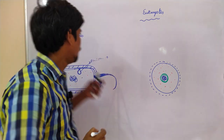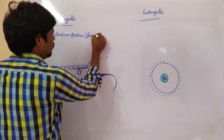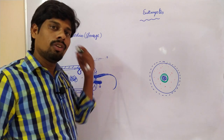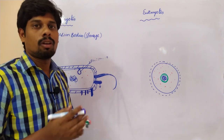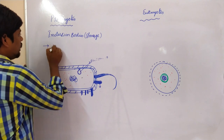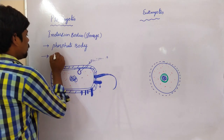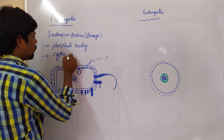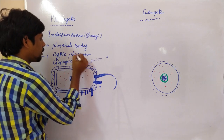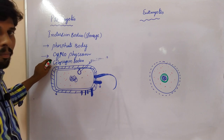Coming to another difference: inclusion bodies, which are present in prokaryotes. These inclusion bodies are nothing but storage bodies. They are very essential for bacterial growth when the bacteria is in a dormant stage. The storage bodies present in prokaryotes include phosphate bodies, cyanophycin, and glycogen bodies.